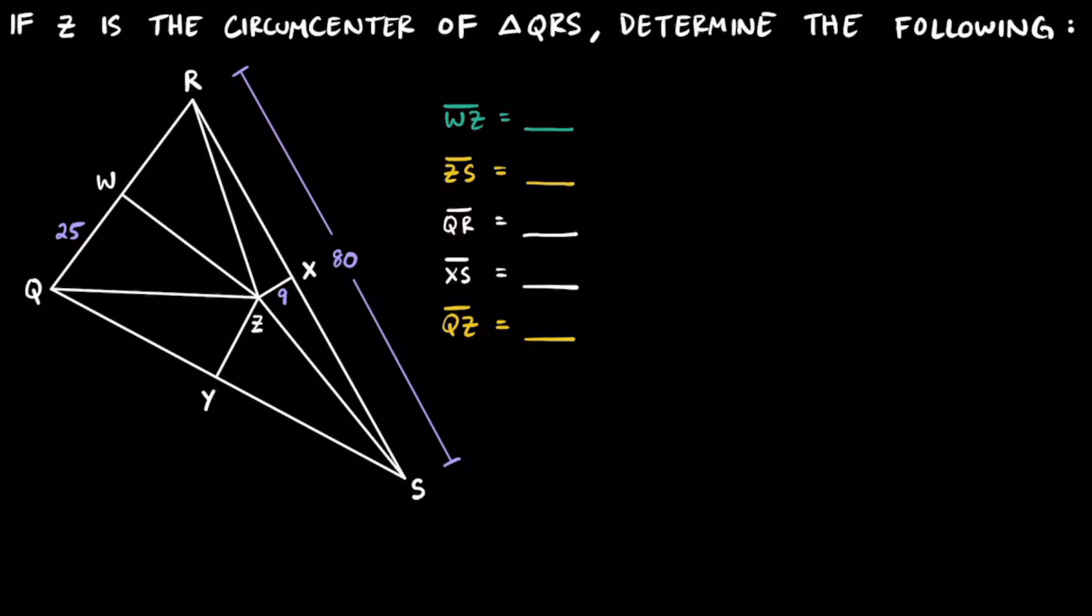To understand circumcenters, it's really important to know that when you take a side length like QS and we draw a perpendicular bisector to it, it creates two equivalent segments like QY and YS, which also creates right angles and therefore right triangles.